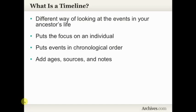The timeline is a different way of looking at the events in your ancestor's life. It's a different view than what you get on an ancestor chart or a family group sheet, putting the focus on an individual rather than a family or several generations. It puts the events in chronological order, and you can design the timeline however you want — a good way is to add things like ages, sources, and notes.